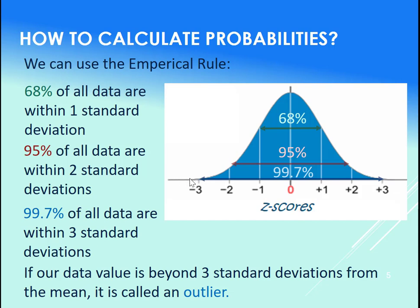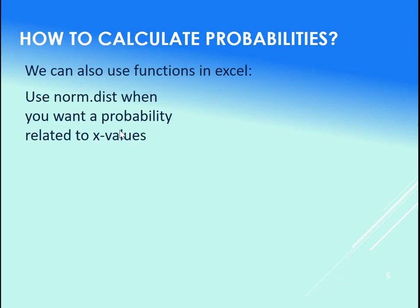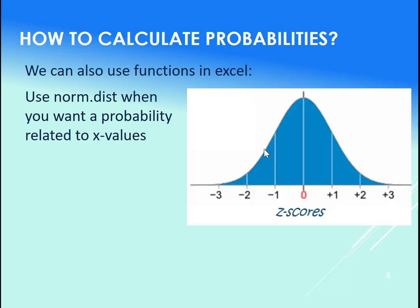Now if we didn't have z-scores perfectly one, two, or three, how else would we calculate probabilities? Well, Excel does a beautiful job of it. So let's use the Excel function. So norm.dist—we use that when we want to get the probabilities related to x values.